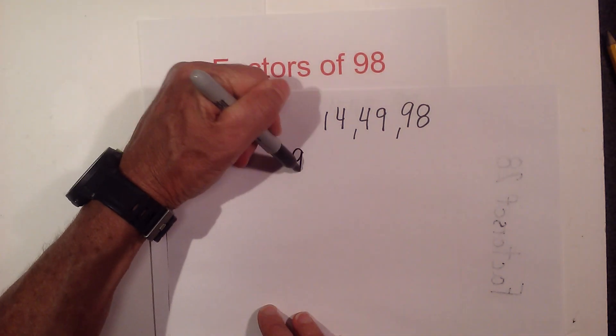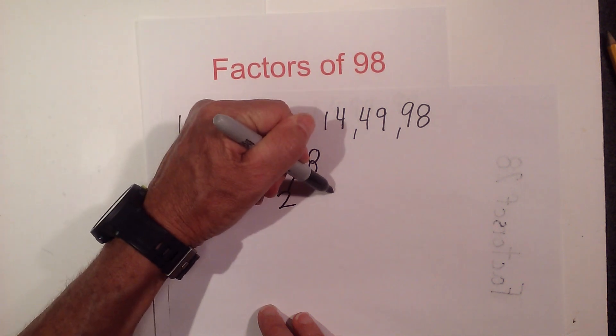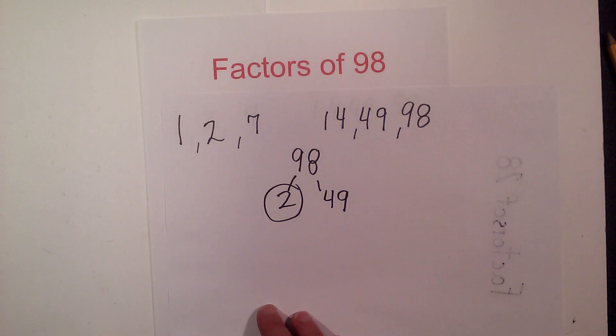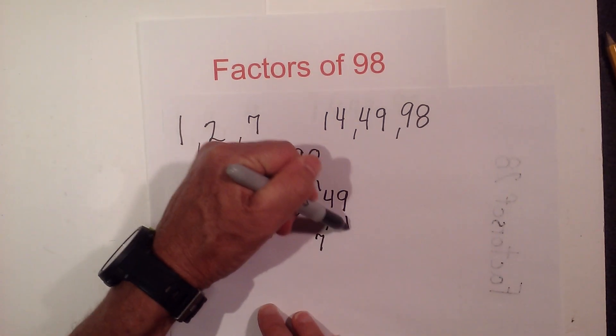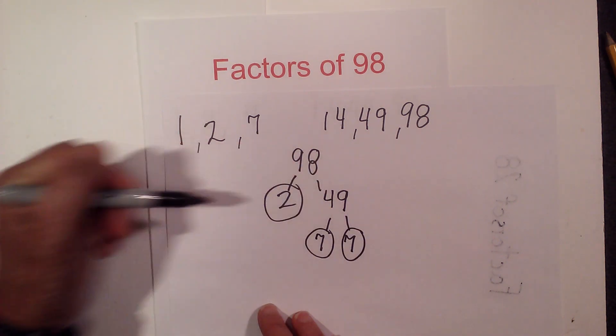Now let's find the prime factors of 98. I will begin: 2 times 49 equals 98. Circle the 2 because it is prime.